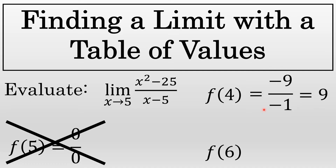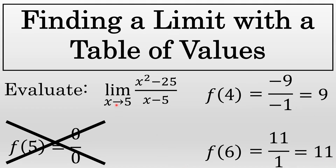We can also evaluate a value 1 bigger than 5, like 6. f of 6: 6 squared minus 25 over 6 minus 5 is 11 over 1, which equals 11. So although you cannot get a value for f of 5, you can get a value for f of 4 and f of 6. This implies that the limit as x approaches 5 is likely in between 9 and 11. Is it 10? Let's complete a table of values to see.